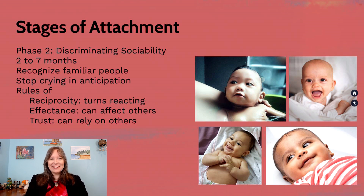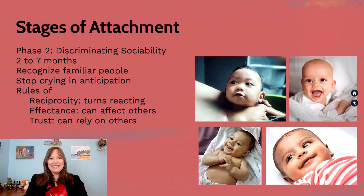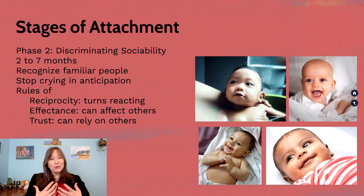The second rule is the rule of effectiveness — the idea that goes beyond just smiling and crying impacting the environment. Now we get to more specific behaviors: dropping an object will get someone to pick it up, or making a loud bang will make someone come and say a certain word. At this age babies may start to learn meanings of words like 'no' or 'yes' — they're not able to speak the words yet, but they can start to recognize their name and recognize that when they do certain things, people respond in a specific way rather than a general way, as understood in stage one.